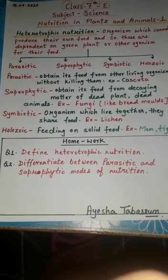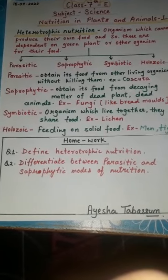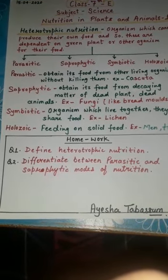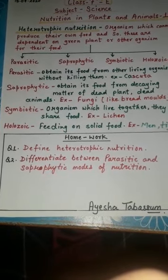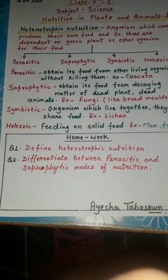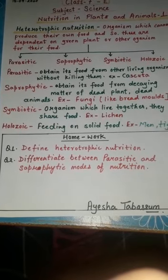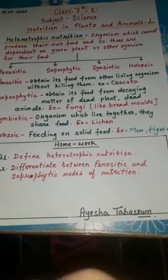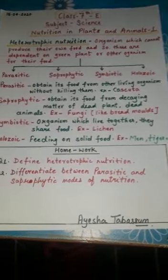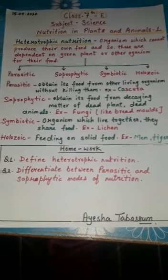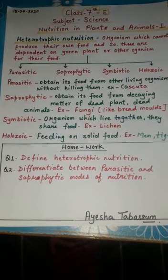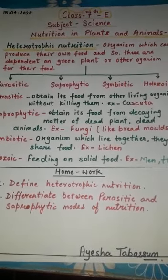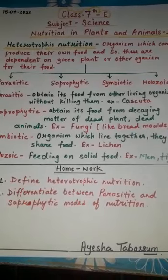The second type is saprophytic nutrition. Saprophytes get their food from dead organisms, whether it is the dead body of plants or animals. For example, mushroom and algae.